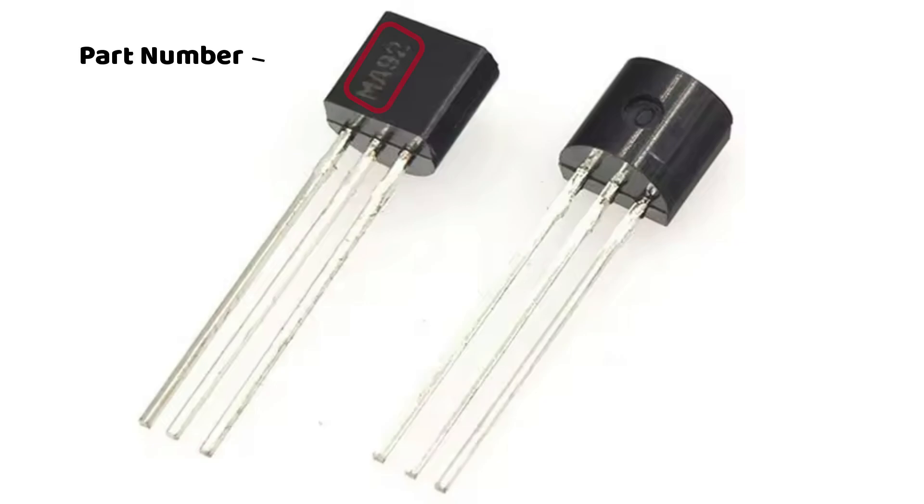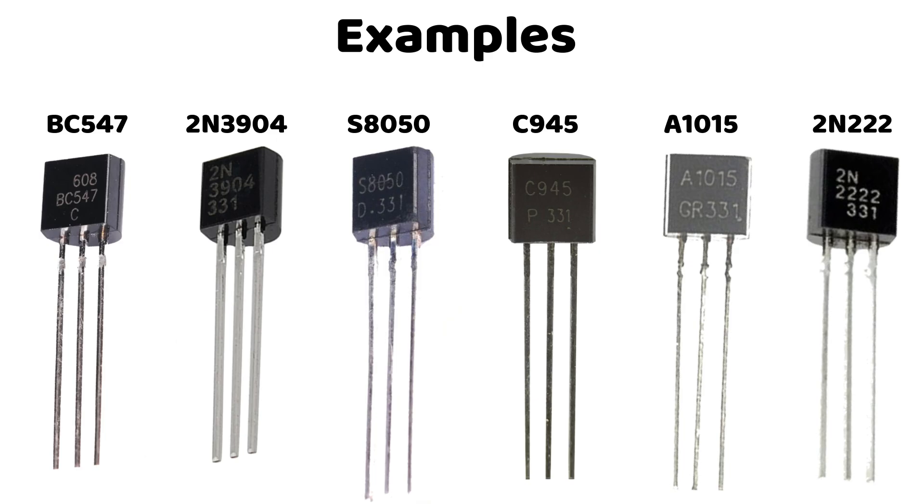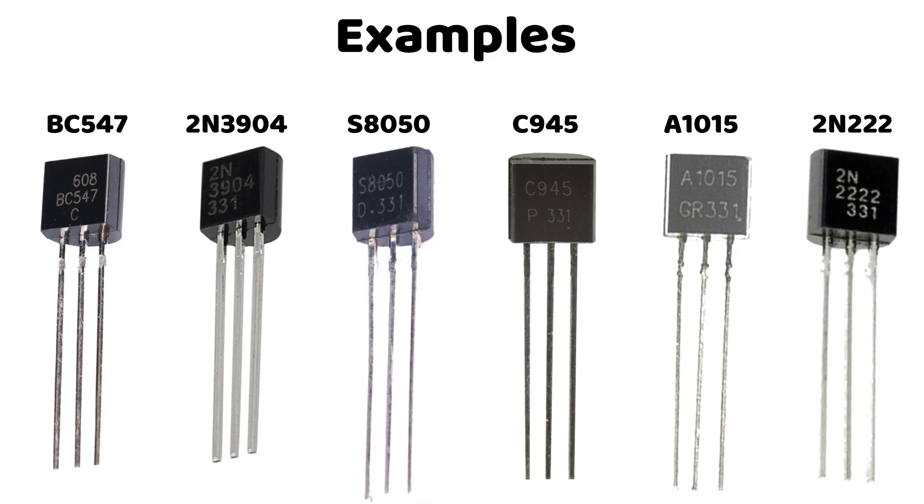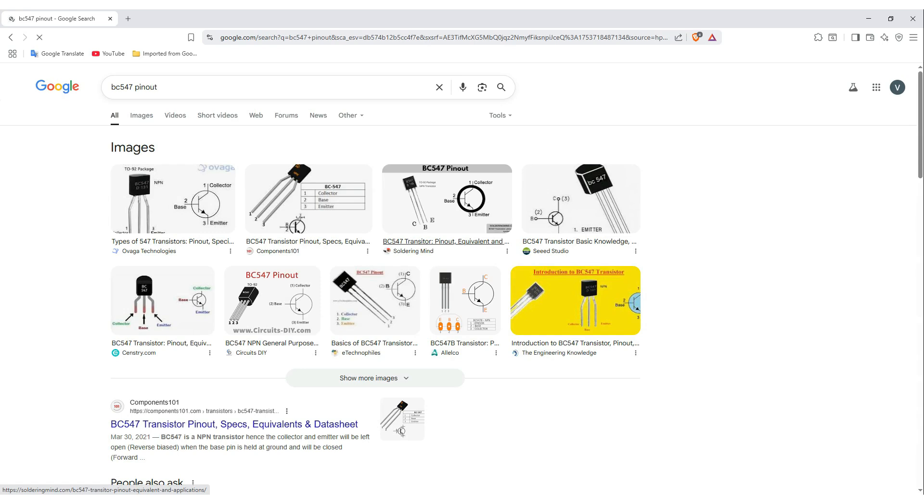Check the part number. Every transistor has a part number printed on its flat side. For example... Just google the part number plus pinout, and you'll find its datasheet or images showing which pin is base, collector, and emitter.